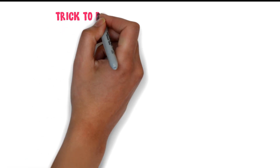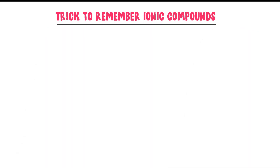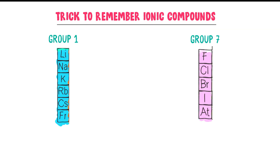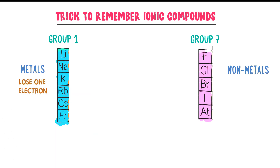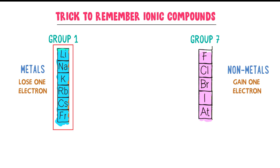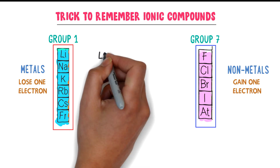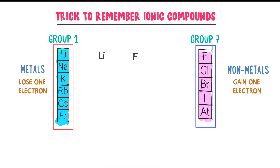Now let me teach you a super easy trick to remember ionic compounds. Consider group 1 elements and group 7 elements. We know that all elements in group 1 are metals while all elements in group 7 are non-metals. Group 1 elements lose 1 electron and group 7 elements gain 1 electron. I will select 1 element from metals and 1 element from non-metals — for example, lithium from metals and fluorine from non-metals.